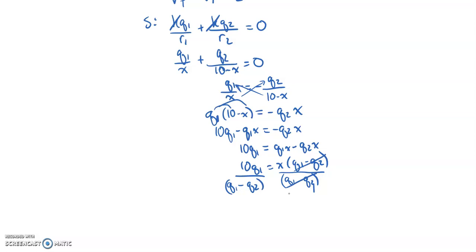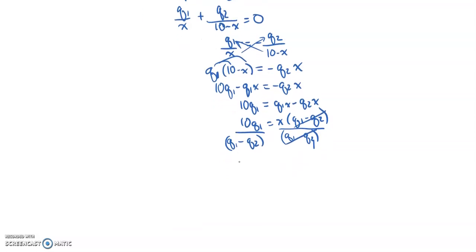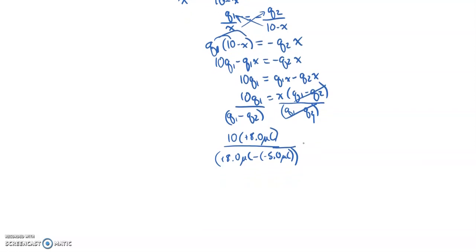Dividing both sides by (q1 minus q2), we get x equals 10·q1 divided by (q1 minus q2). Substituting the charges: the numerator is 10 times 8 micro coulombs, which is 80 micro coulombs·cm, and the denominator is 8 micro coulombs minus negative 5 micro coulombs, which equals 13 micro coulombs. So x equals 80 divided by 13.